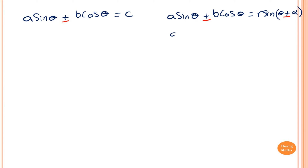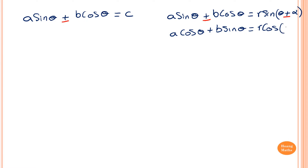If it is a·cosθ + b·sinθ, the first term is cosine, so we use cosine: that is equal to r·cos(θ). Remember for cosine, if you expand, positive becomes negative. So positive becomes negative alpha, and if it is negative, it becomes positive. Please take note on that. So let's focus on a·sinθ + b·cosθ and convert it into r·sin(θ + α).